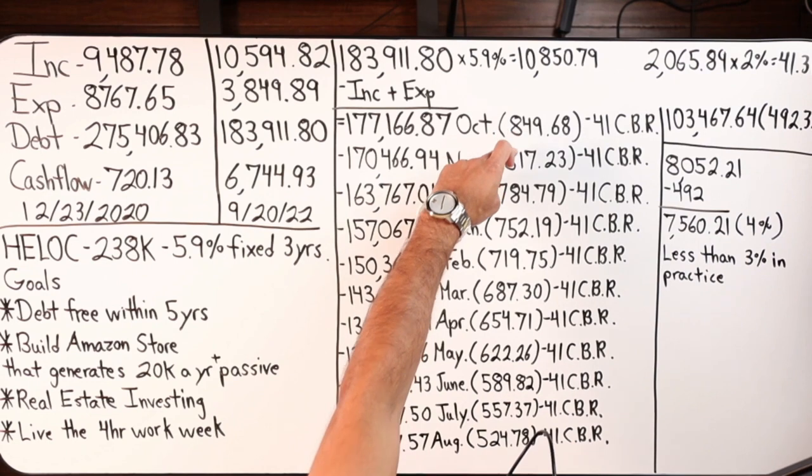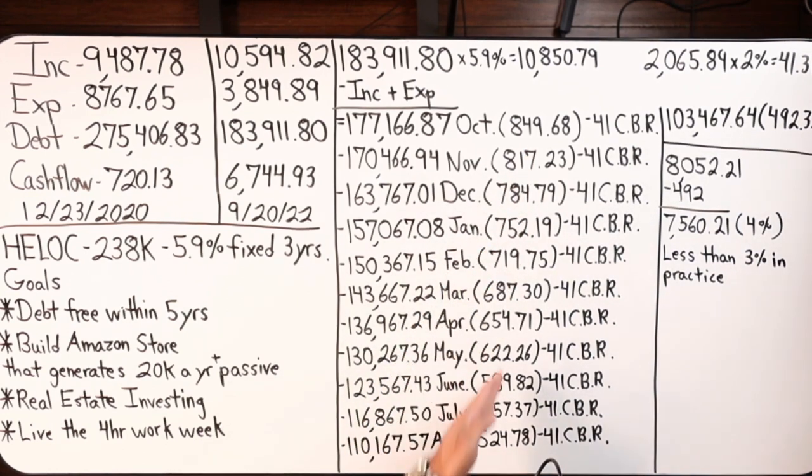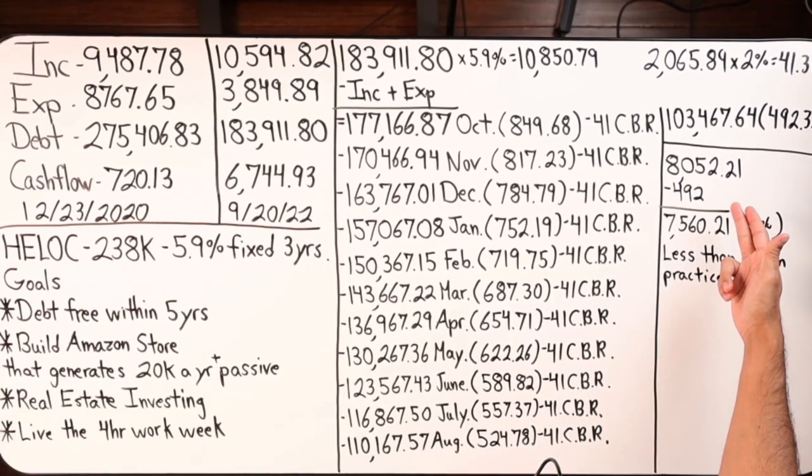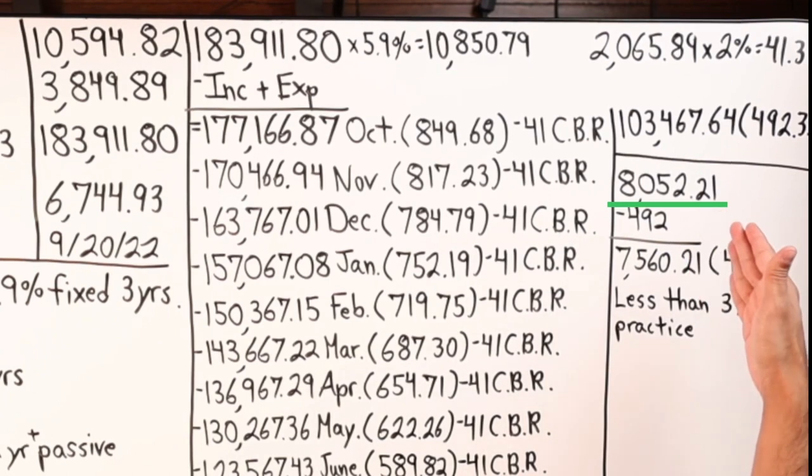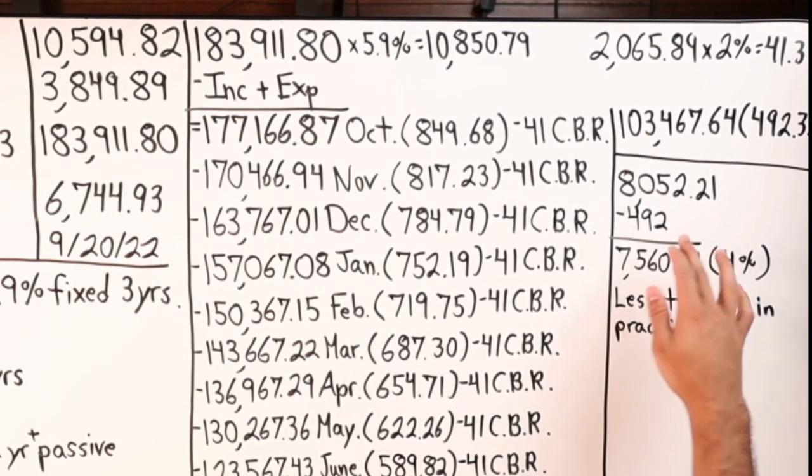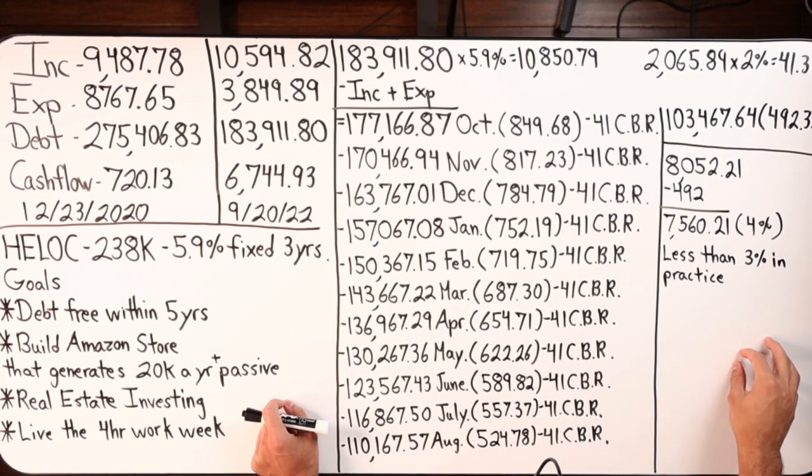So if we were to look, this is a 12 month period, it goes all the way down to $492.33 by September of 2023. If you were to add up all these numbers right here, $849, $817, $784, $752, $719, add all these numbers up, add that $492, you're gonna get $8,052.21. Not bad. So you go from $10,850.79 at 5.9% to $8,052.21 minus $41 times 12, so minus $492 in cashback rewards. By the way that number could be higher. You're down to $7,560.21 ladies and gentlemen. That is around 4% borrowing costs. So you went from 5.9% and you knocked off two points. Tremendous. You knock off two points.